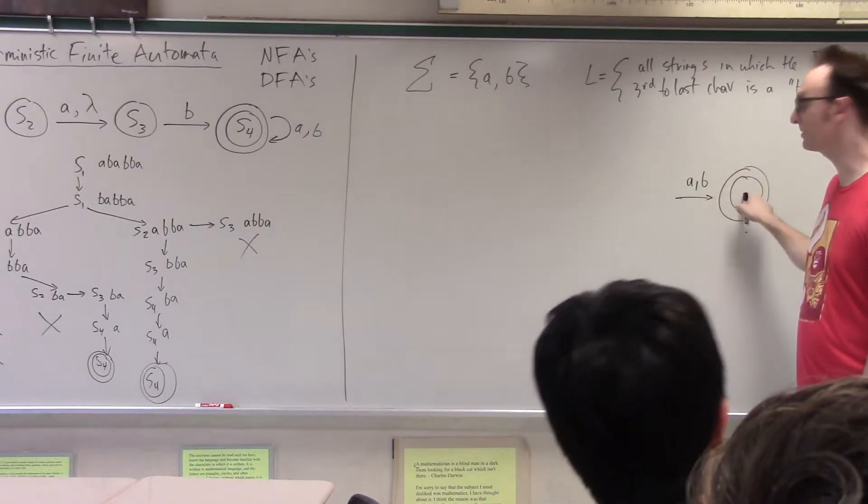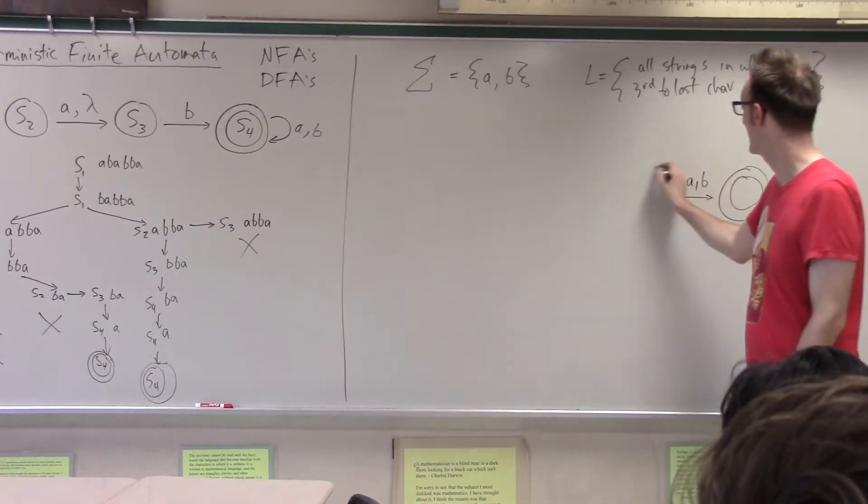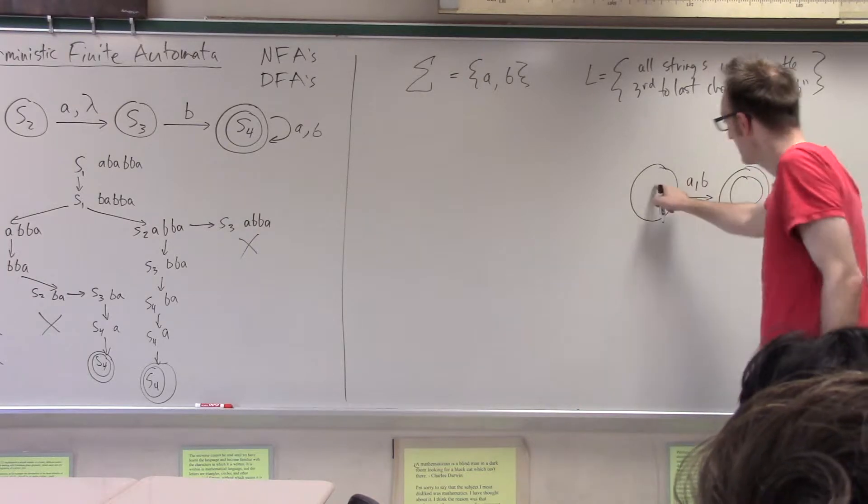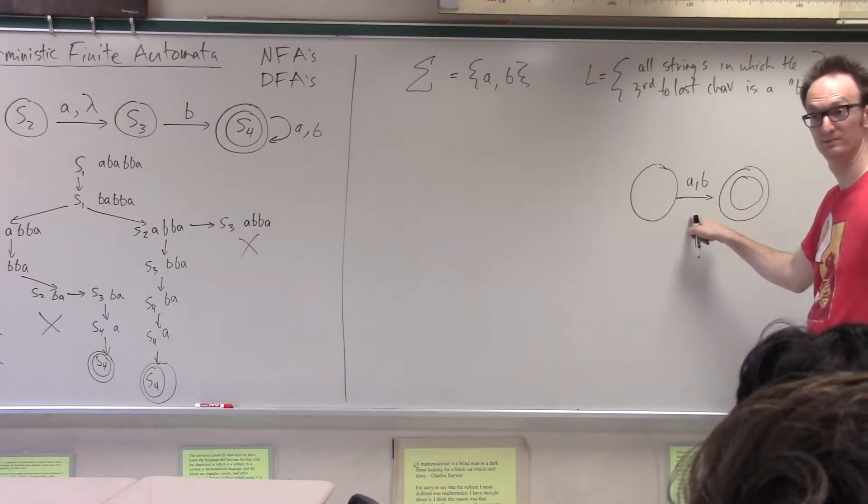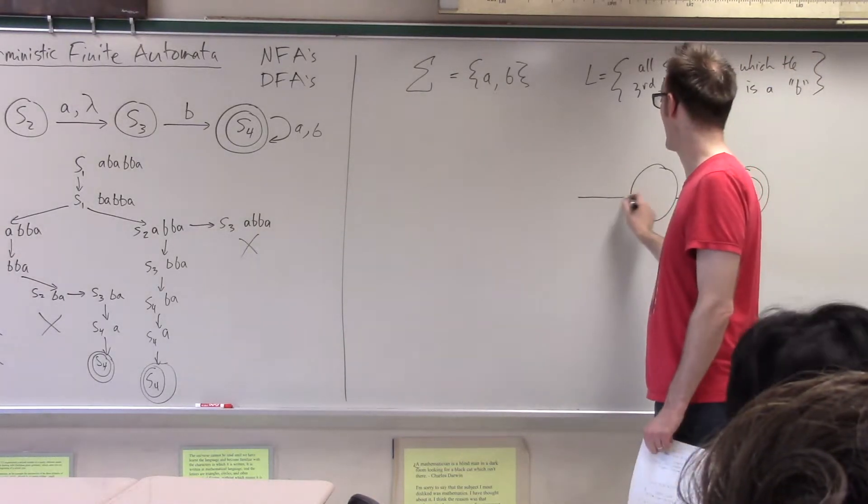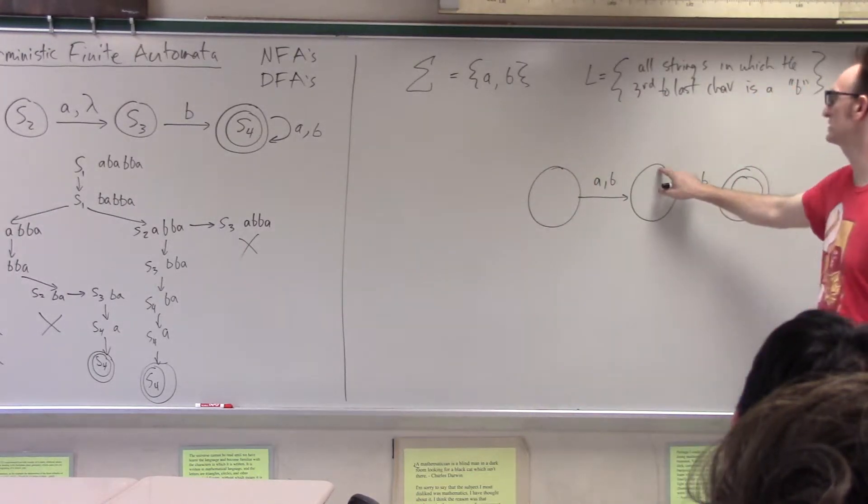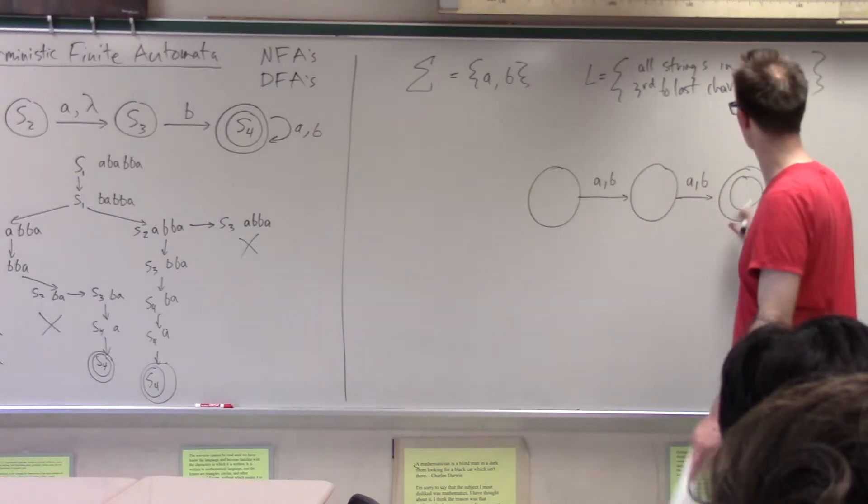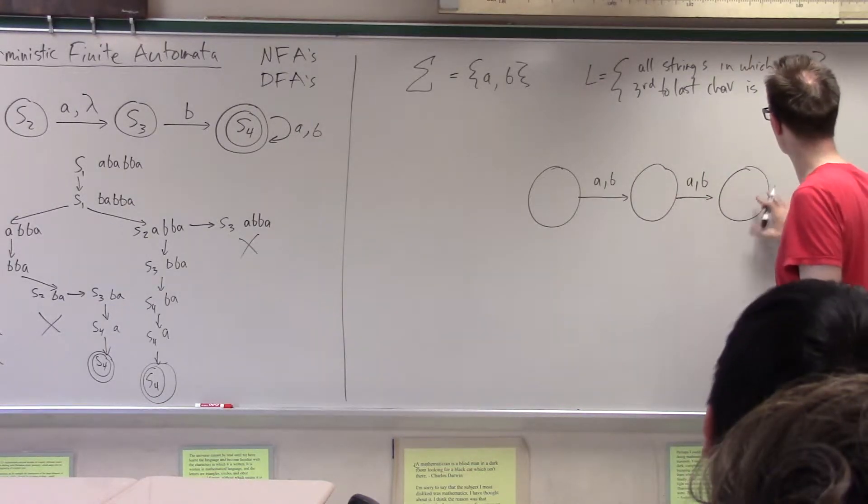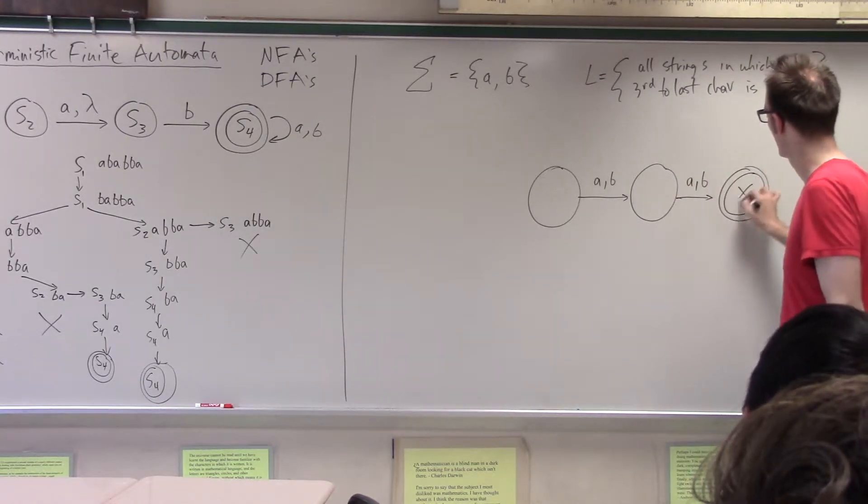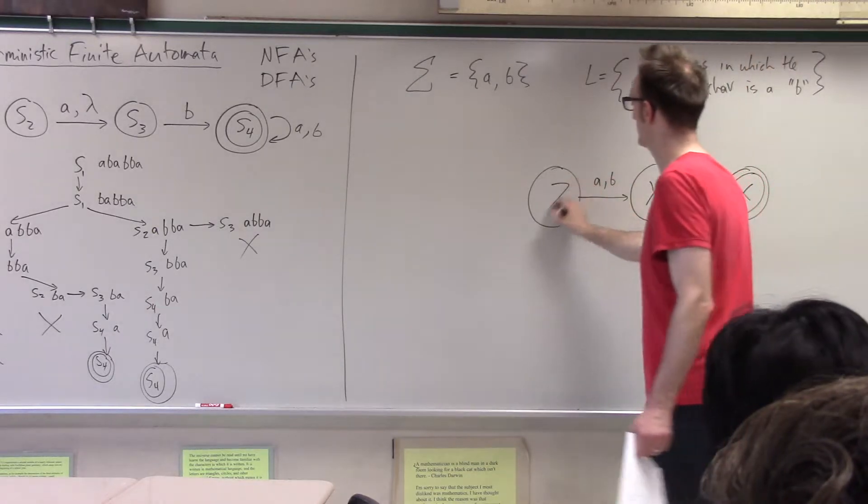But yeah, okay, so I should be able to accept a string if the last character can be anything. The second to last character can also be anything, right? So this state, I almost need names for these. Let's call this accept state X. Let's call this Y. Let's call this Z or something, right?